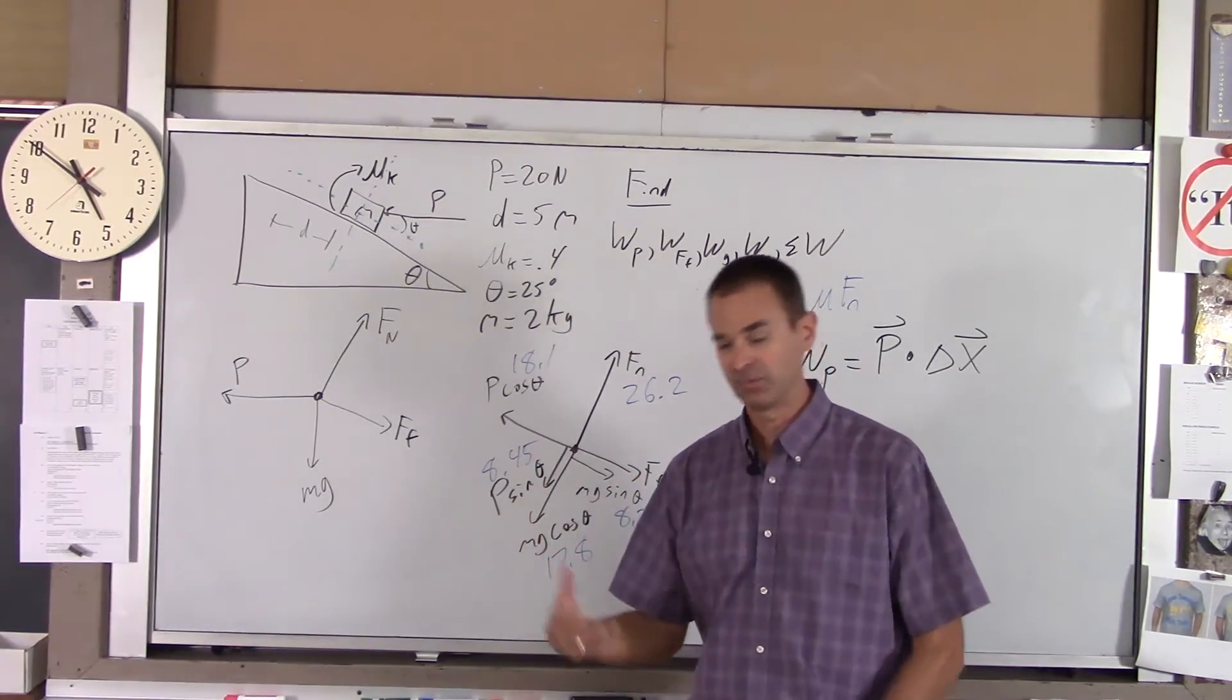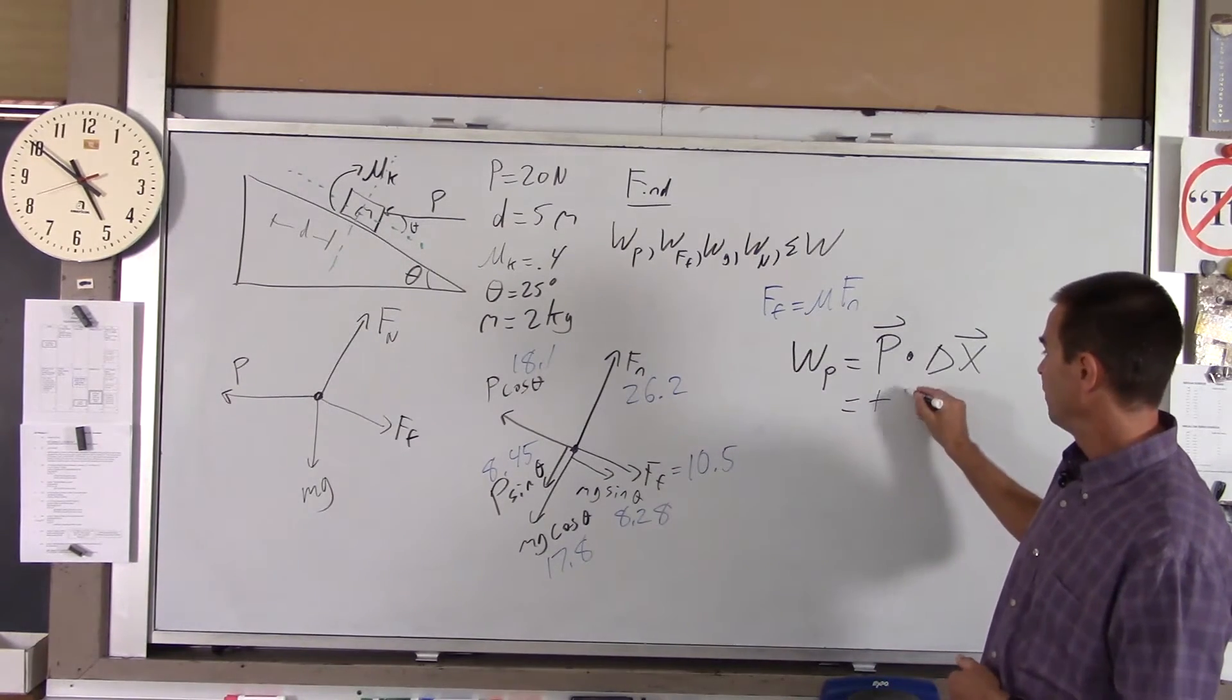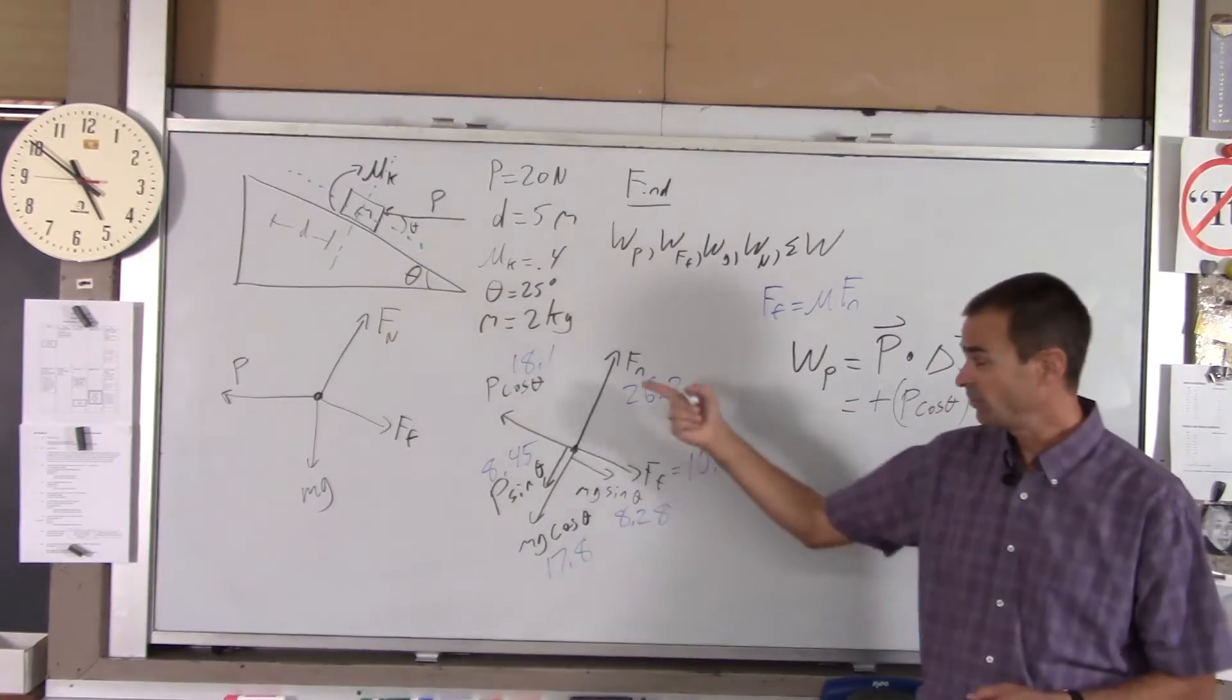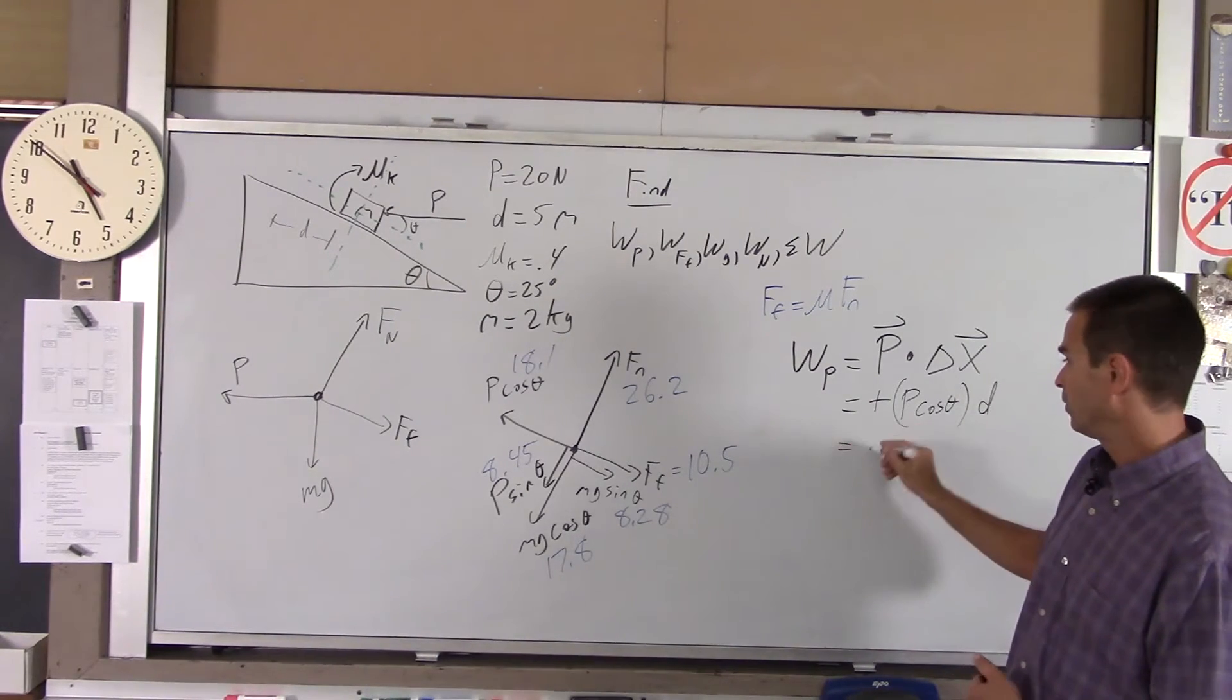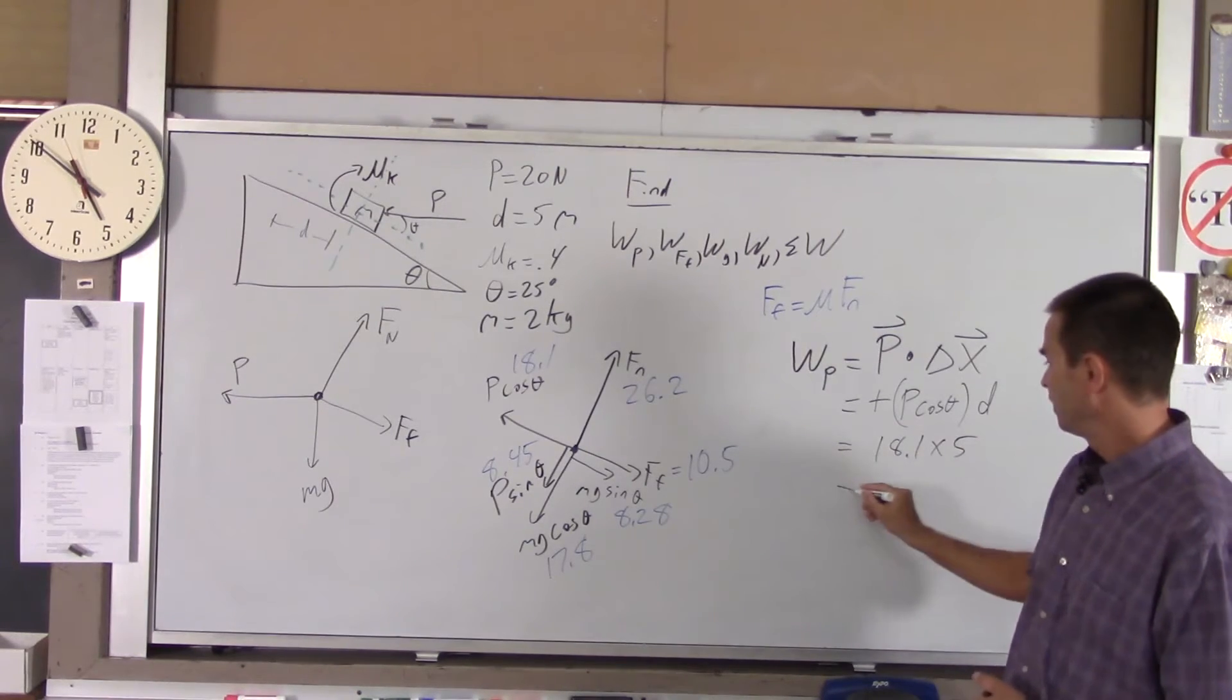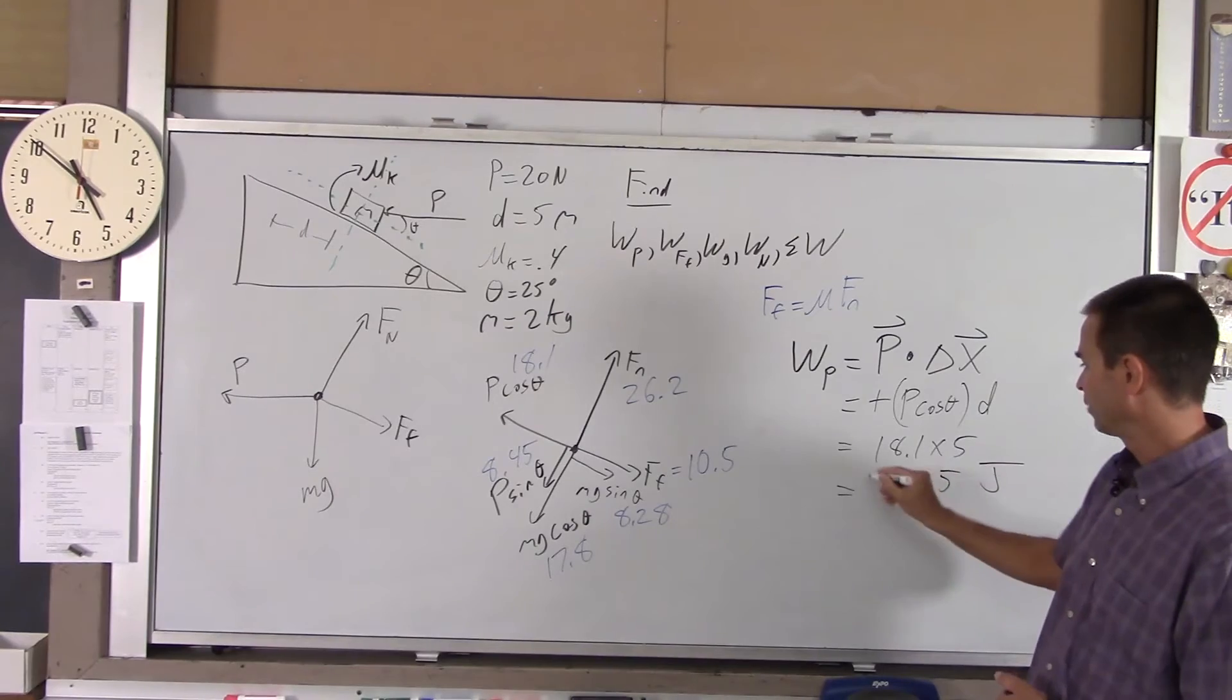So I write a positive, and then it's P cosine theta, which I know that's 18.1, times delta x or distance, which is five. So I'll put a d there. Then we do 18.1 times five and you get 90.5 joules, and that's positive. So that's the work done by the push force.